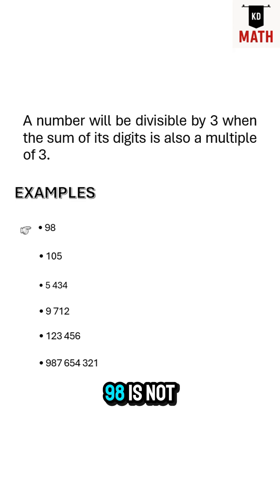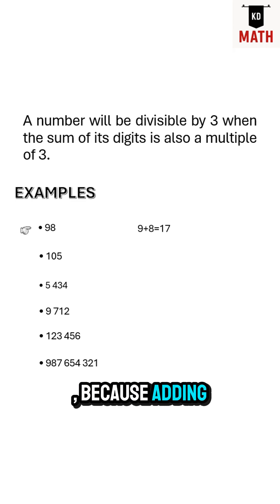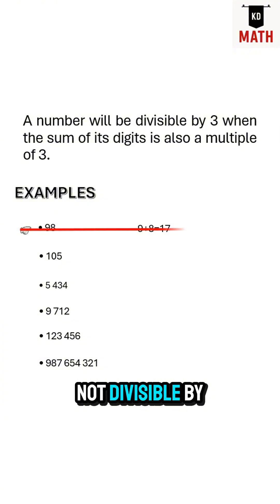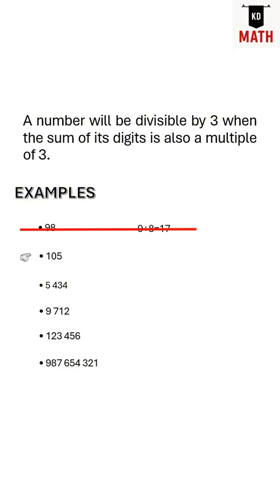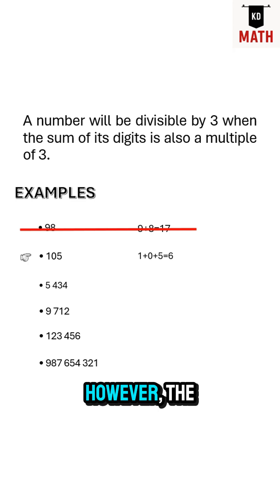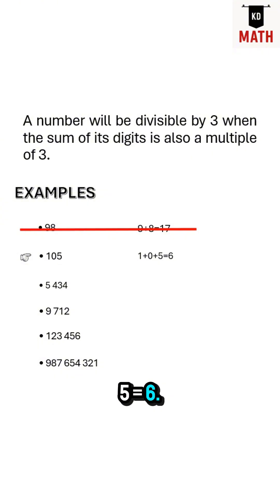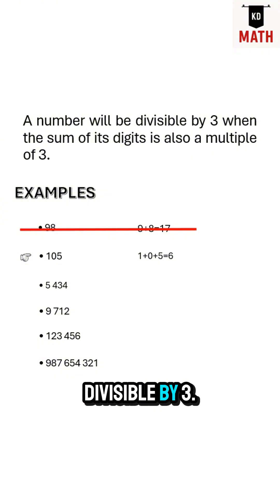98 is not divisible by 3 because adding 9 plus 8 gives us 17 as a result, and 17 is not divisible by 3. However, the number 105 is divisible by 3 because 1 plus 0 plus 5 equals 6, and 6 is divisible by 3.